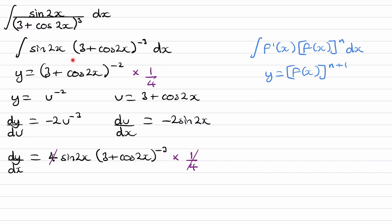So if this differentiates to make what we're trying to integrate, then what we're trying to integrate integrates to give us this. Our final answer is therefore a quarter of (3 plus cos 2x) to the power of minus 2, plus c.